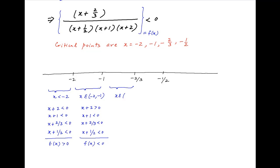The next interval is x lying between minus 1 and minus 2/3. Here (x plus 2) is positive, (x plus 1) is positive, (x plus 2/3) is negative, and (x plus 1/2) is negative in this interval. It follows that f(x) is positive in this interval.